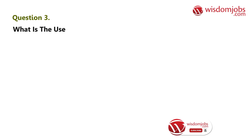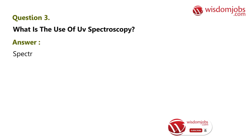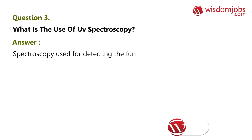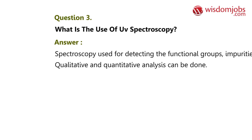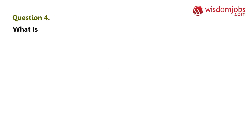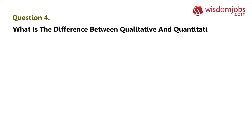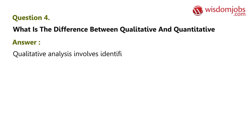Answer: Spectroscopy is used for detecting functional groups and impurities. Qualitative and quantitative analysis can be done. Question 4: What is the difference between qualitative and quantitative analysis? Answer: Qualitative analysis involves identification of the compound or chemical based on their chemical absorption, emission, or physical properties.